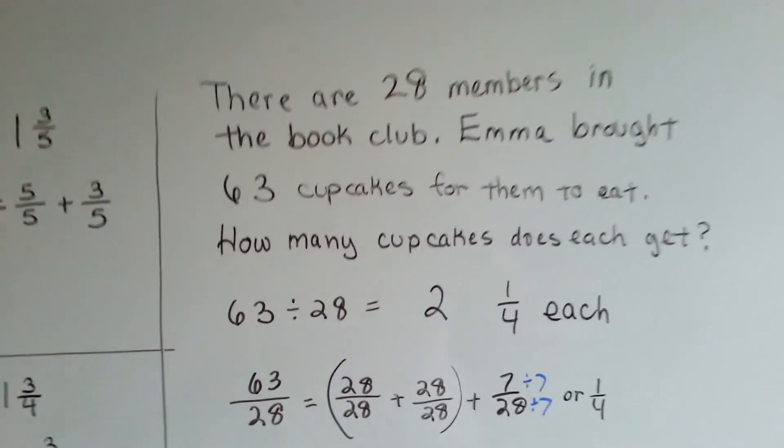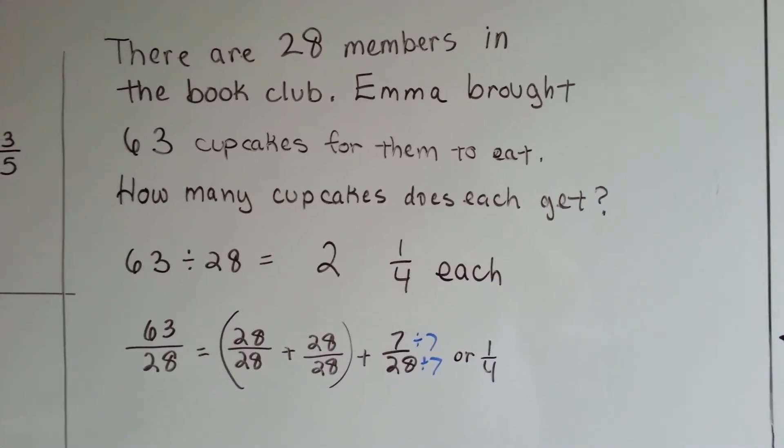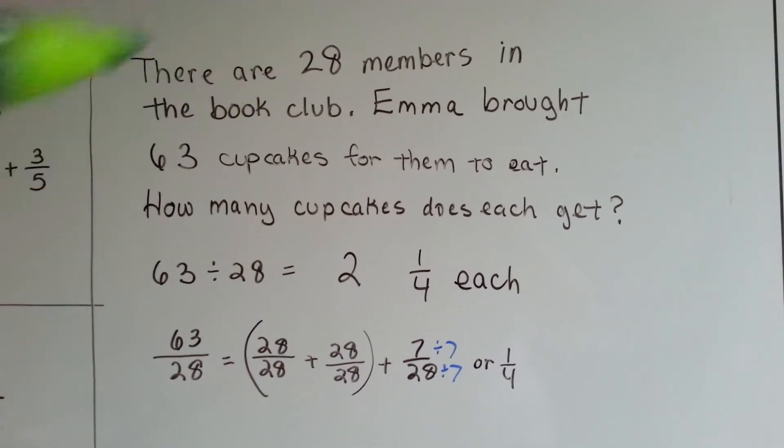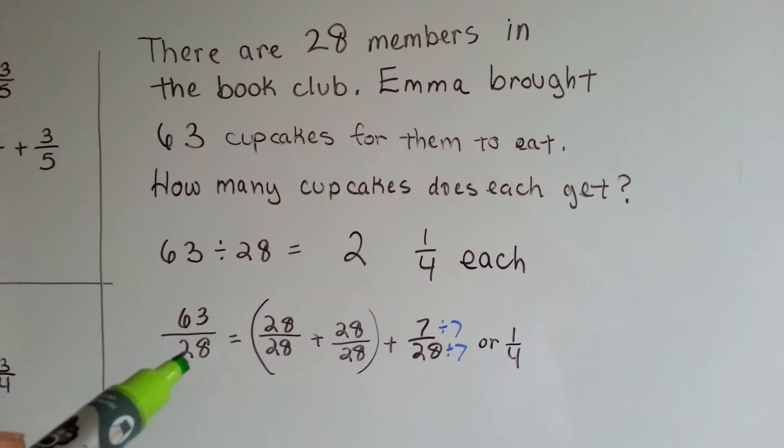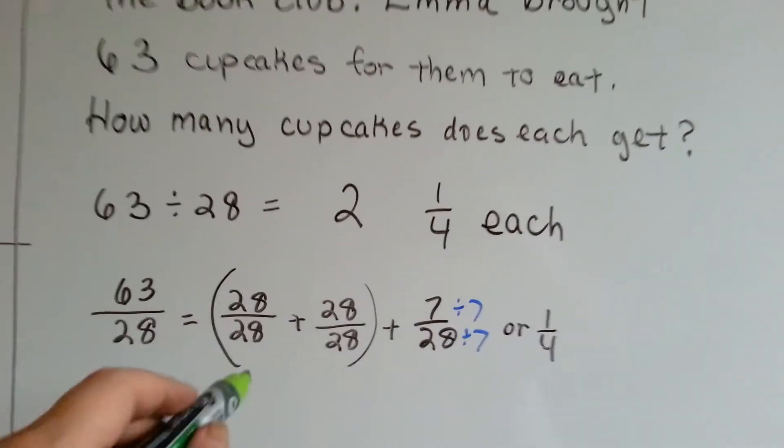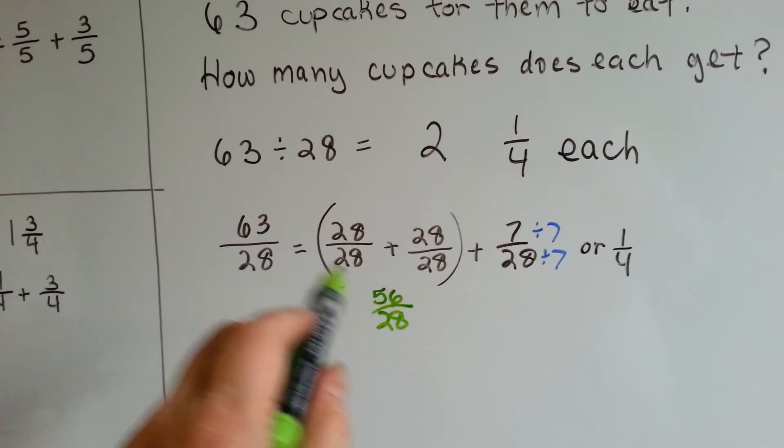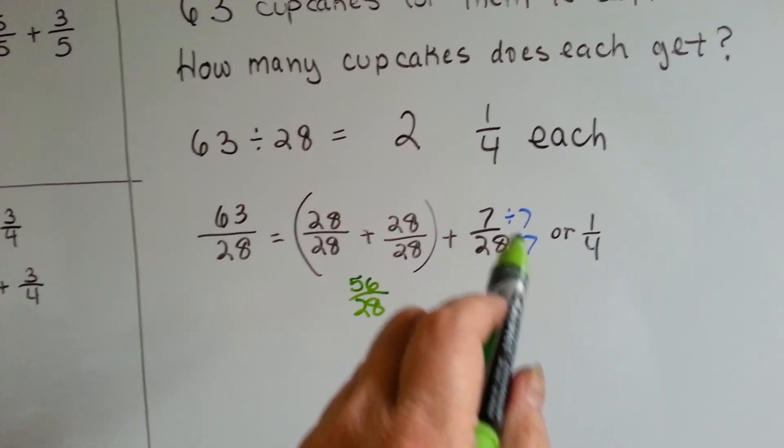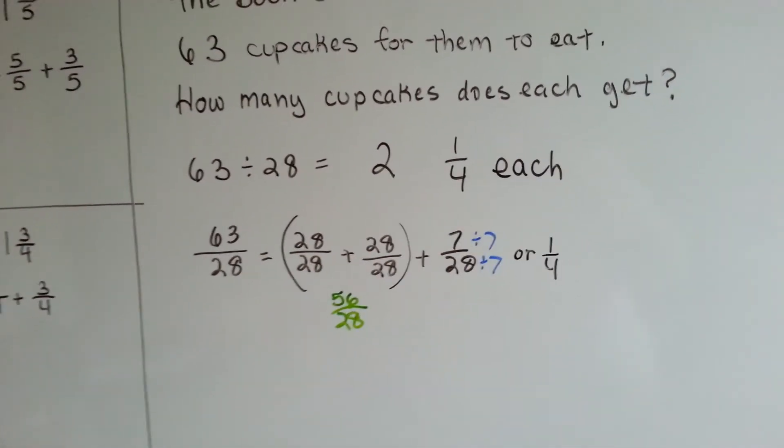Here's a word problem. There are 28 members in the book club. Emma brought 63 cupcakes for them to eat. How many cupcakes does each get? So we have to divide these 63 cupcakes to these 28 people. 63 divided by 28. We can say 63 over 28. There's a 28 28ths in there, and then another 28 28ths. That brings us to 56 28ths. Then there's seven left over until we get to 63. So there's seven 28ths left over. If we divide those by seven, seven divided by seven is one, 28 divided by seven is four. We get two and one fourth each.